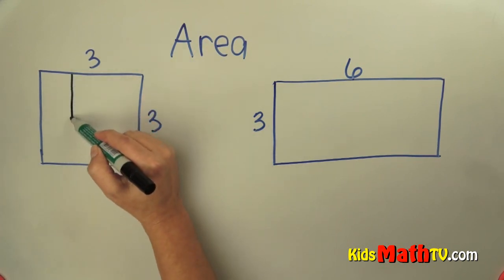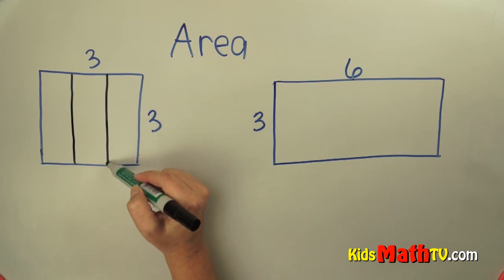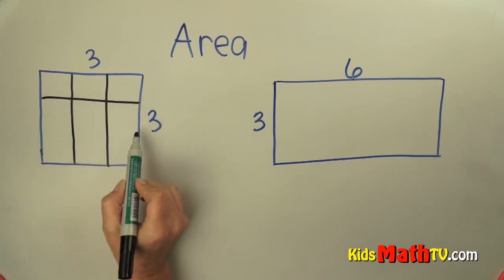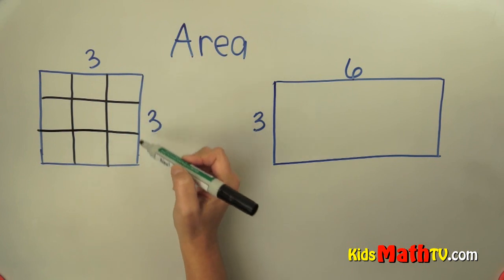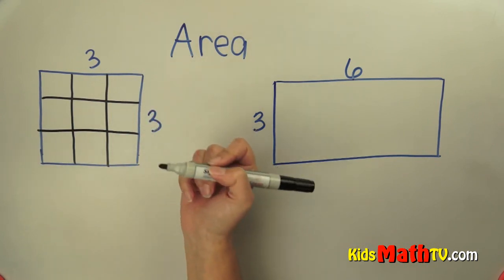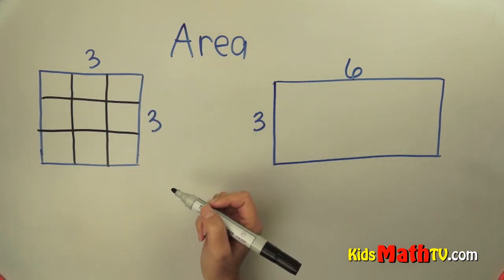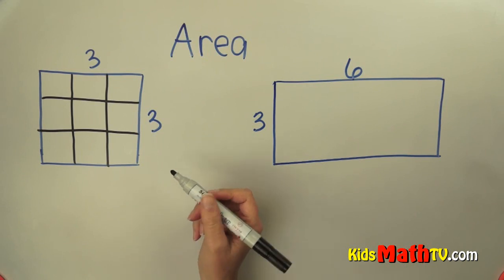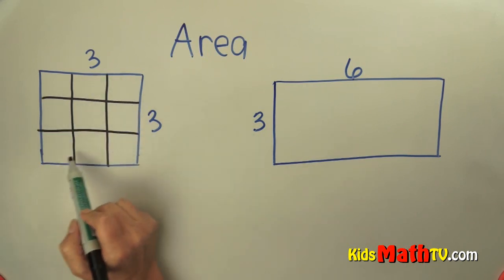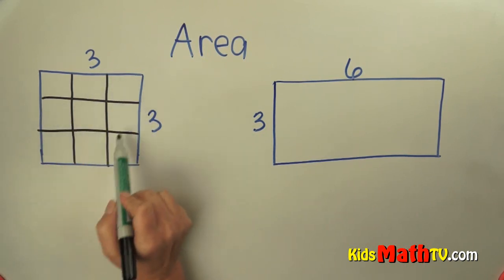So if I were to split this up into three parts, and three parts this way. So there are three across here and three down. Three units, whatever it is, might be centimeters, might be inches, might be kilometers. What I'm finding is how many squares are within this figure.